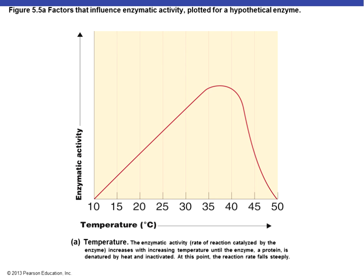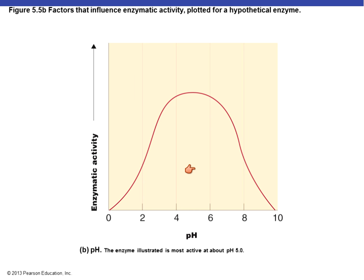Looking at temperature for a hypothetical enzyme — keep in mind not all enzymes require the same temperature or pH — for this particular enzyme optimal enzymatic activity is about 37°C. Anything lower or higher will keep the enzyme from working properly. For pH, this enzyme works best at about pH 5; anything higher or much lower will also keep it from working properly. The rate of enzymatic activity is significantly lowered at either end of those curves.